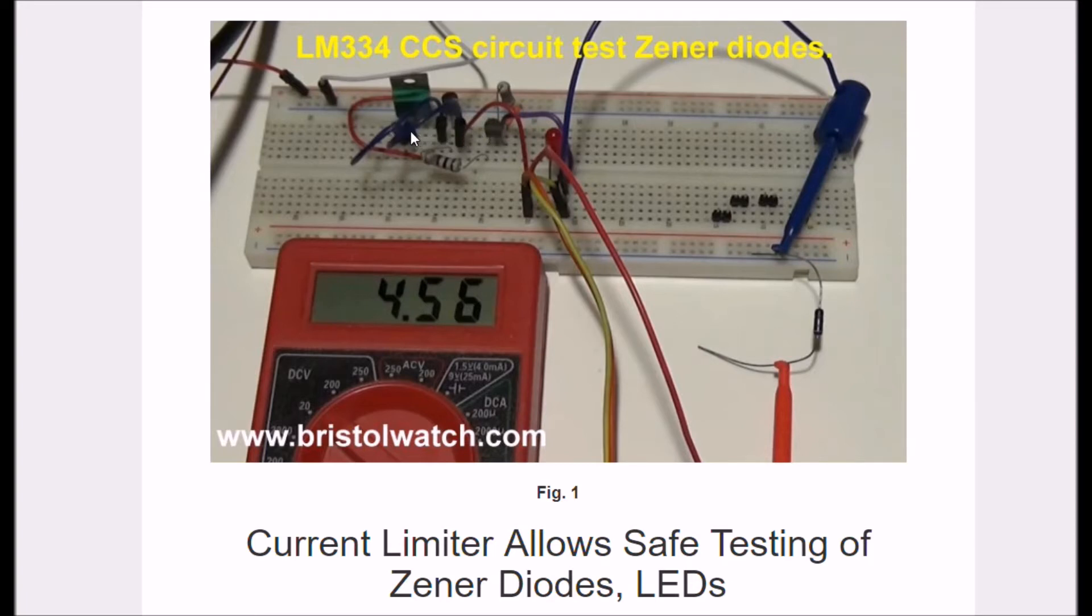And all I'm doing is using this constant current source. Here's an LM334, a 2N3906, and a PNP, another PNP transistor that can, by changing this one resistor right here, I can control the current through the constant current source.